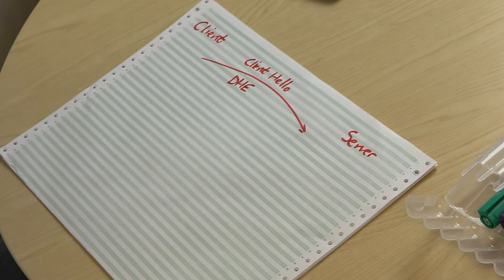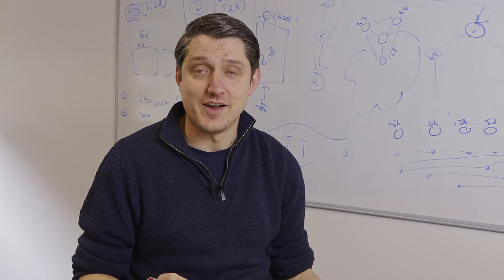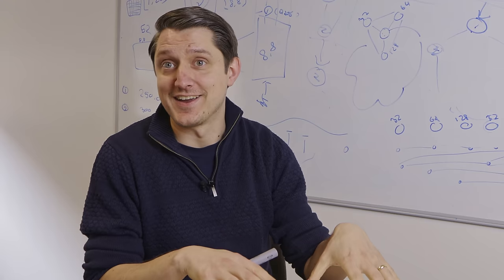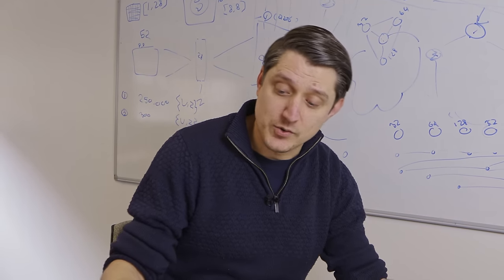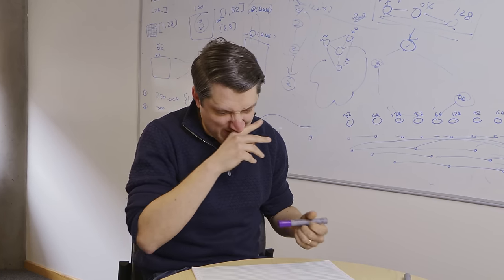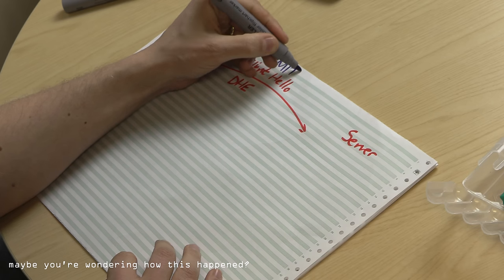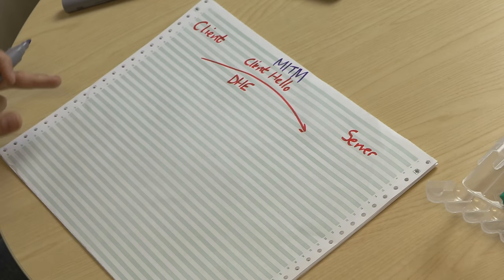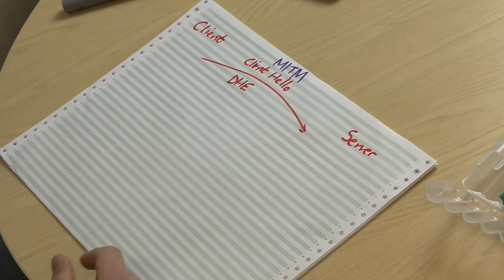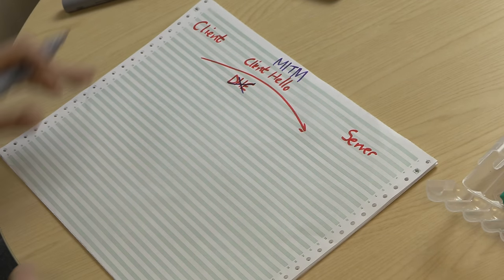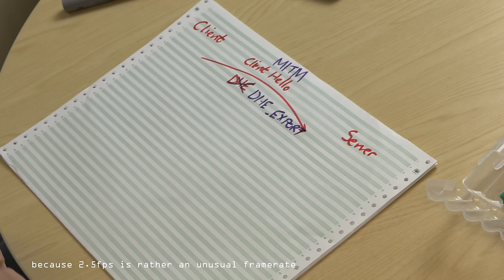Now remember, this is from 2015 — Diffie-Hellman ephemeral is no longer used. We usually use elliptic-curve Diffie-Hellman, and actually one of the reasons is this attack. What we do as an attacker — I'm going to get my malicious purple pen — is we intercept this as our man in the middle. We're a man in the middle, and we can read and manipulate any of these messages. Maybe we're sitting on a router. We say: no, we're not having that. We rewrite this message to contain Diffie-Hellman ephemeral export.